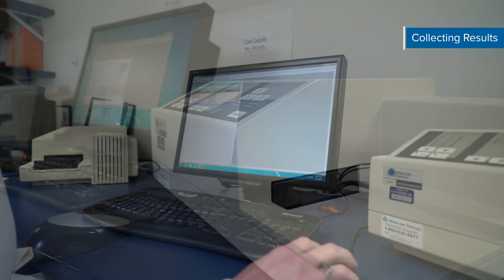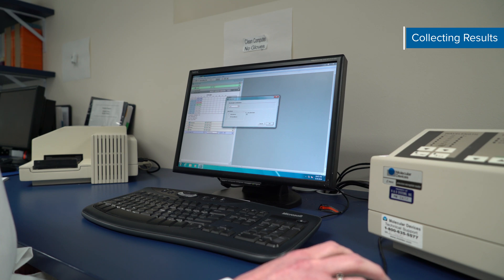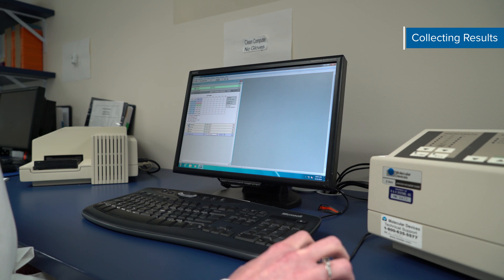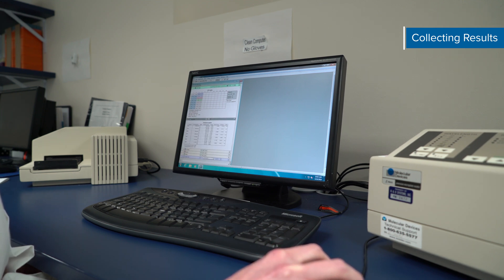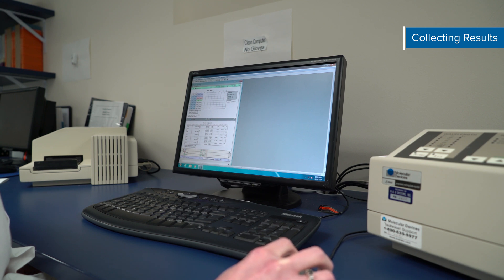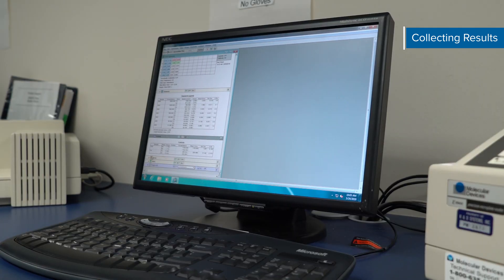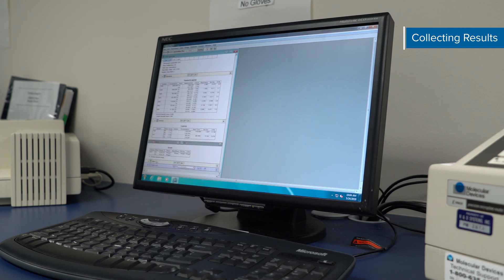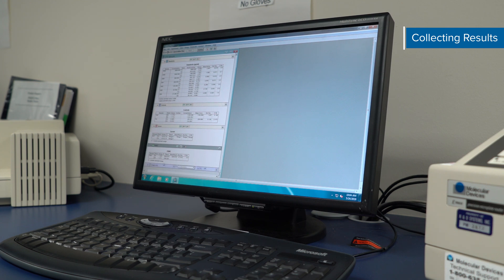To evaluate your data, first subtract the average of the blank wells from all of the wells. If wavelength correction is available, set it to 540 or 570 nanometers. This will correct for optical imperfections in the plate. Readings made directly at 450 nanometers without correction may be higher and less accurate due to slight imperfections in the plastic of the 96-well ELISA plate. Plot your standard curve and read controls and unknowns off of the standard curve. The blank wells should not be incorporated into the standard curve.